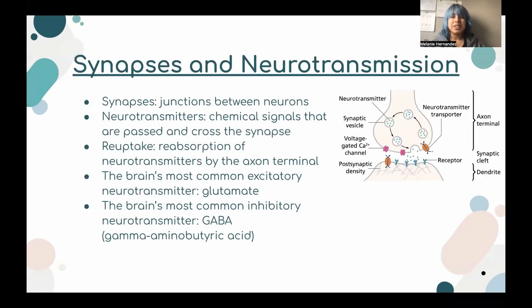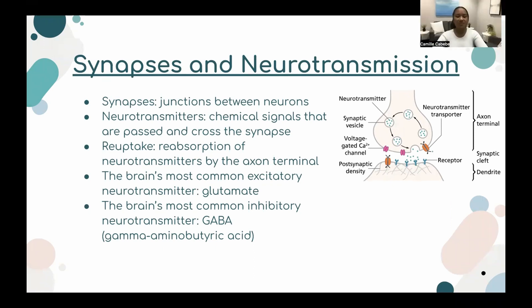We'll talk about synapses and neurotransmission. Neurons pass information to each other in the process of neurotransmission. Synapses are junctions between neurons. Neurotransmitters are chemical signals that are passed across the synapse. Once a neurotransmitter is detached from its receptor, there is a process called reuptake, which is the absorption of neurotransmitters by the axon terminal. There are two types of neurotransmitters: excitatory and inhibitory. Excitatory neurotransmitters like glutamate excite neurons to fire, while inhibitory transmitters like GABA prevent neurons from firing.